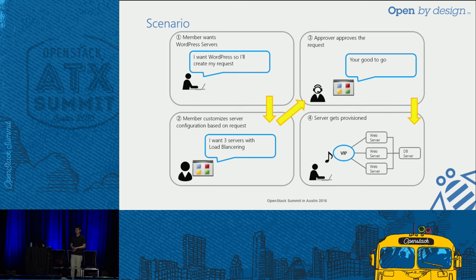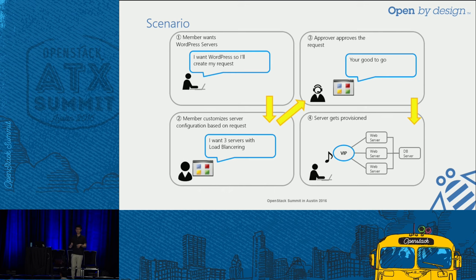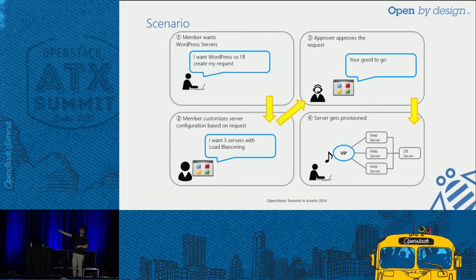Let's think of a very simple scenario. A guy named Member says he wants a WordPress server. He logs into his web portal and does his customization — he wants three servers in load balancing. Before he gets his server, in this demo, I will have an approver approve his request. After it gets approved, he gets his server.